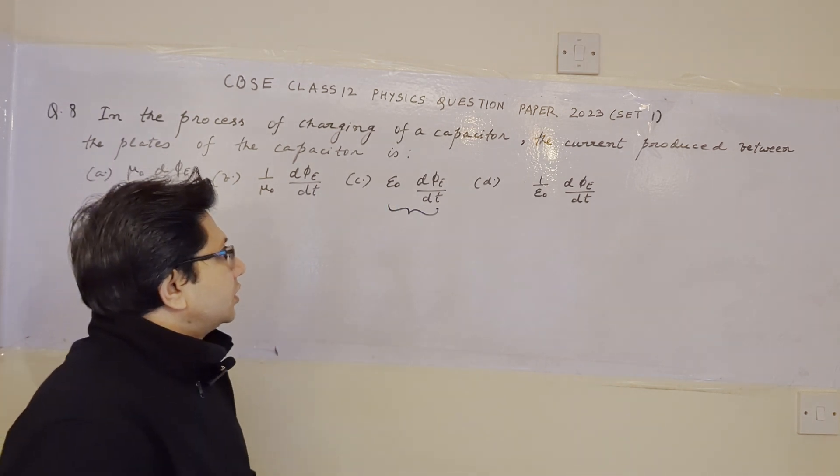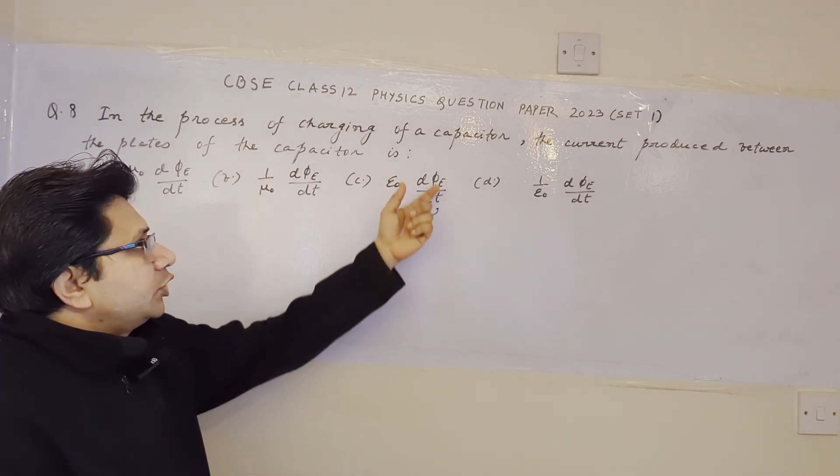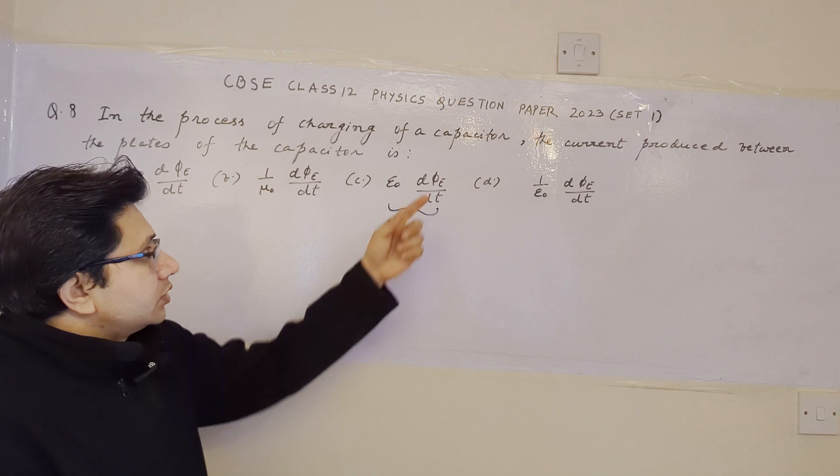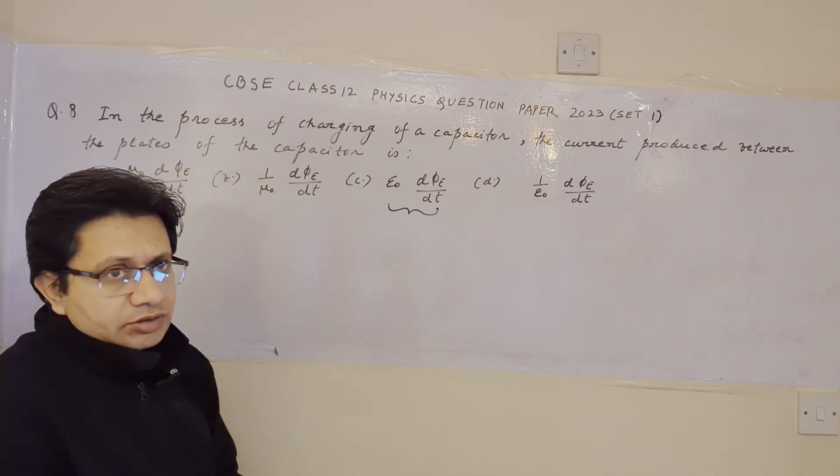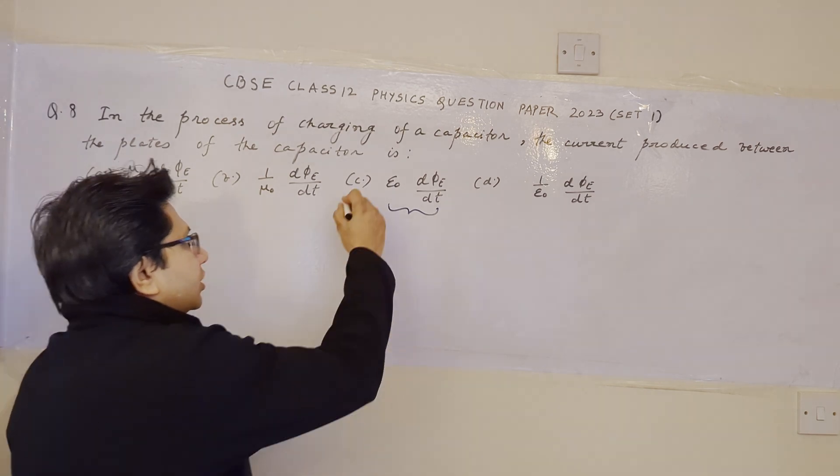the current is epsilon0 d by dt of phi subscript e, where phi subscript e is known as the electric flux. So option C is the correct option.